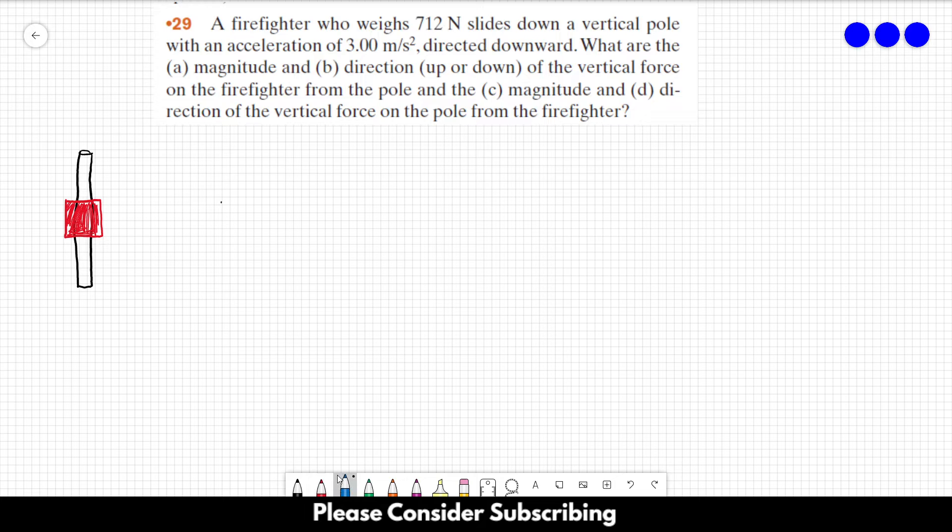So we have two different forces acting on the firefighter. We have the force of gravity, which I'm going to call Fg, the force from gravity, and the force from the pole. And let's suppose that upwards is positive and downwards is negative.